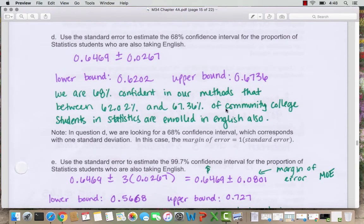So again, we're predicting about all community college students and that 68% is confidence in our method, not anything to do with the sample students.